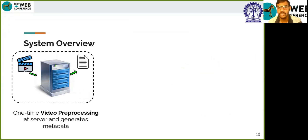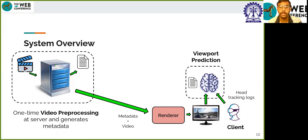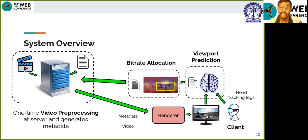Now let's look at the complete working of our system as a whole. A one-time video pre-processing is done at the server side, and the metadata of the video content and the object trajectories are stored. The server then sends the object trajectory information and a few initial frames to the client. The client uses a head mounting device to watch the video, which records the head tracking logs. Using the user head movement logs and the metadata sent by the server, the client runs a viewport prediction model for future frames and allocates appropriate bitrates to each tile. The bitrate information for each tile within a chunk is communicated back to the server, which then sends the corresponding frames at the specified bitrate. The major tasks are video pre-processing, viewport prediction, and bitrate allocation.